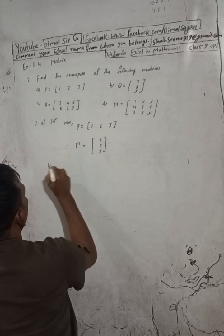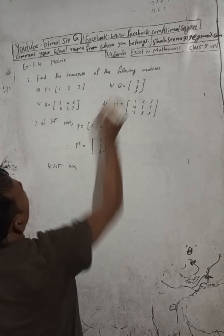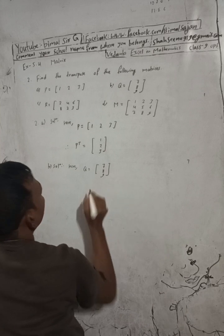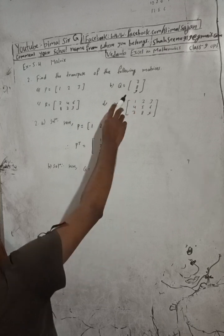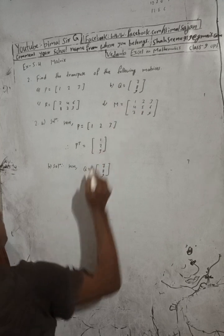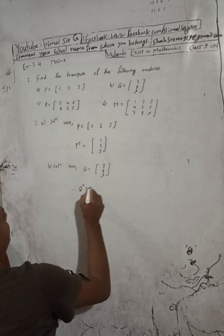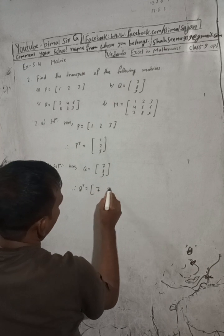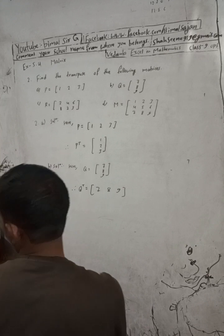Similarly, for part B, Q is equal to [7, 8, 9]. We have to find the transpose. By interchanging the row and column, we get Q transpose. The first column is now a row: 7, 8, and 9. Let me check the book answer.